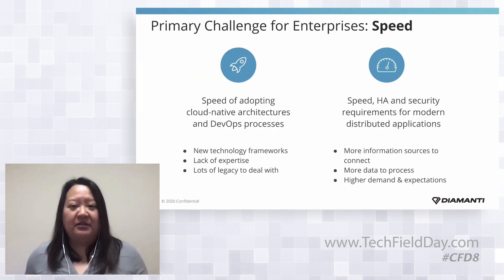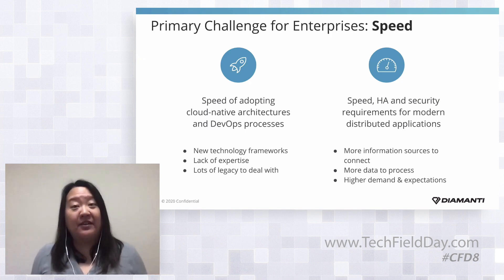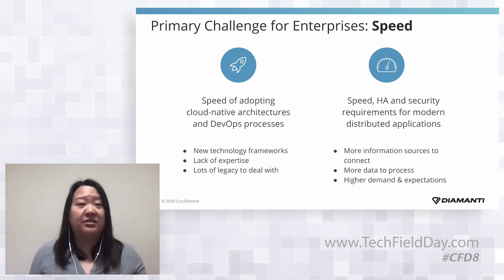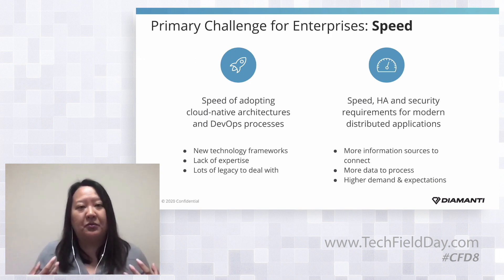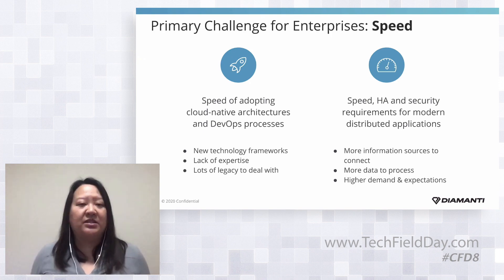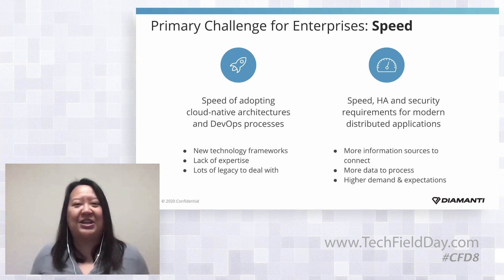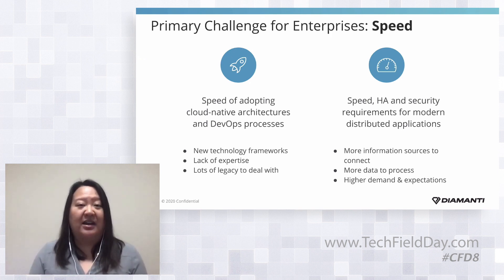The real challenges we set out to solve are twofold. First, the transition to Kubernetes is happening very fast, but it's still very difficult for companies trying to build their own solutions to get up to production scale with do-it-yourself projects. The idea behind a fully integrated software and hardware platform is to help people adopt new DevOps processes and cloud-native architectures without worrying about the infrastructure underneath. Second, the new application architectures are really stretching traditional server architectures to support all that IO traffic and east-west traffic.